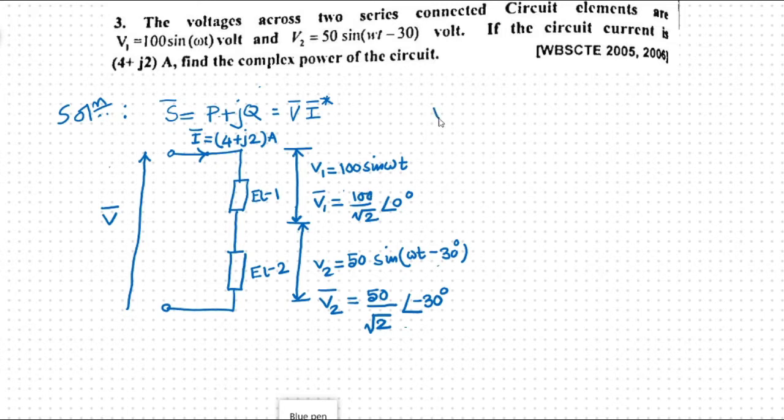So, from the diagram, it is clear that the input voltage is basically equal to V1 bar plus V2 bar. That means, the phasor sum of the voltage across two elements of the circuit will give you the input voltage to the circuit. Because you need that voltage for finding the complex power of the circuit. So now, this is equal to 100 by root 2 at the angle of 0 degree plus 50 by root 2 at the angle of minus 30 degree.